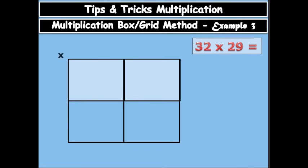You draw your boxes, or you draw your columns and then rows. We have on top you write 30 plus 2, that is 32. Then on your left hand side you write 20 plus 9, that is 29.